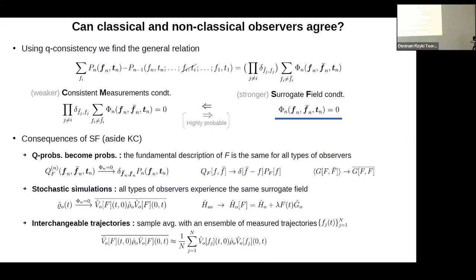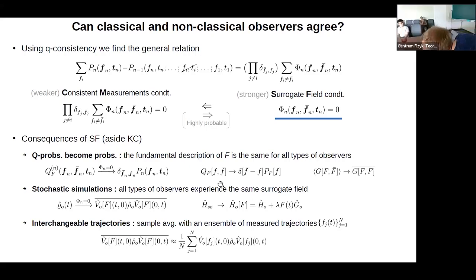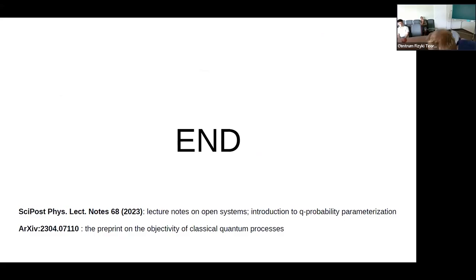So when sequential measurements are transmuted into sampling of trajectories — when the quantum process changes into a classical quantum process — it means the interference terms have to disappear, which means the same trajectories visible to us doing measurements are also those seen by any quantum system coupled to this observable. I have some extra slides if someone is interested in examples of surrogate field systems.